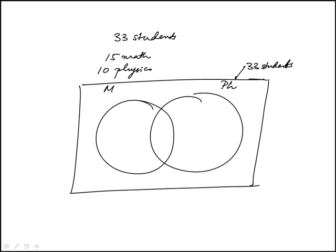So that total is 33. This is 15, that's 10, and they tell us that 5 are enrolled in both mathematics and physics, which means math alone would be 10 because this circle is 15. Same thing, physics alone is 5.